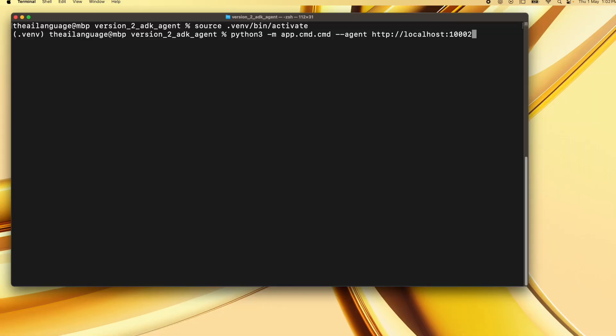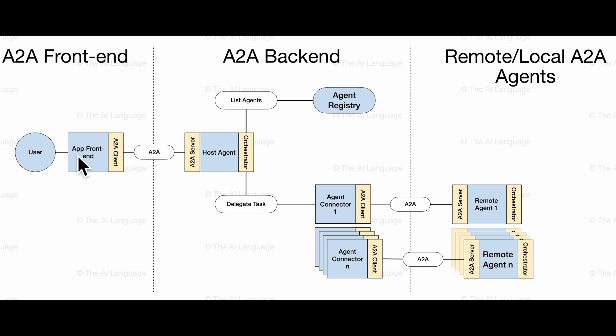As an example, this app front end could look simply like a command line — this is what we did in our last video where we created a command line based interface for our A2A client. We could run this by typing the Python 3 command on the terminal and get a query prompt. You can also have a browser-based web app, mobile app, or anything else with a UI.